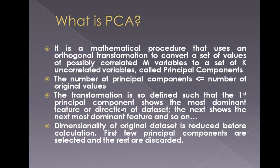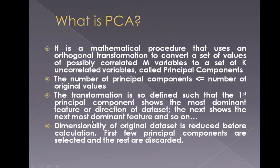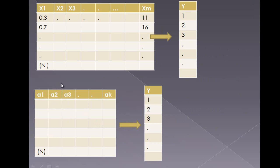The transformation is defined such that the first principal component shows the most dominant feature or direction in the data set, the next shows the next most dominant feature, and so on. We are mapping the m-dimensional feature vector into a k-dimensional feature vector, where a1 has the maximum variance in terms of all existing variables. The next component a2 has the next maximum variance.